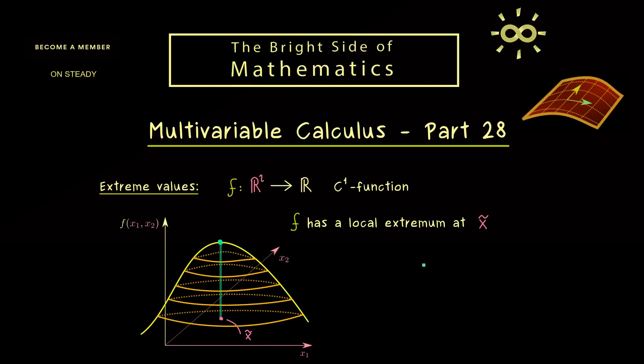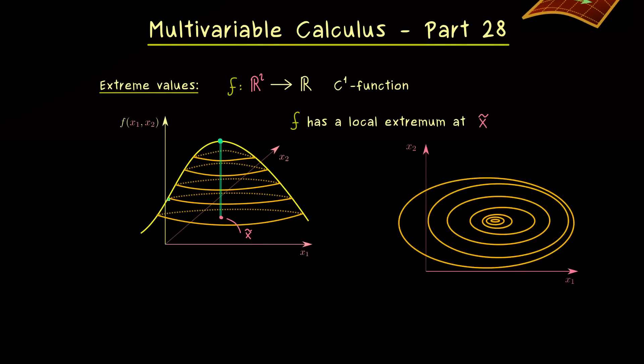Moreover, we have also learned in this video course that instead of visualizing the whole graph, we can just look at the contour lines of the function f. For this example, it would look like this. So you can say we just project the lines we see on the mountain to the plane R².